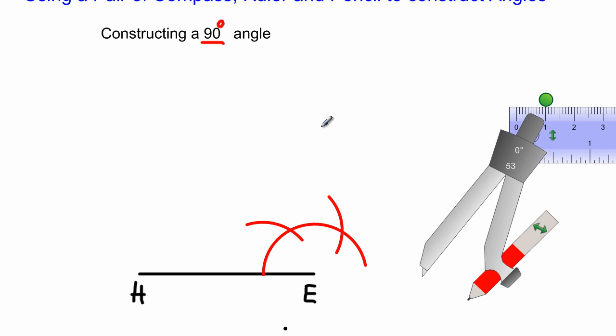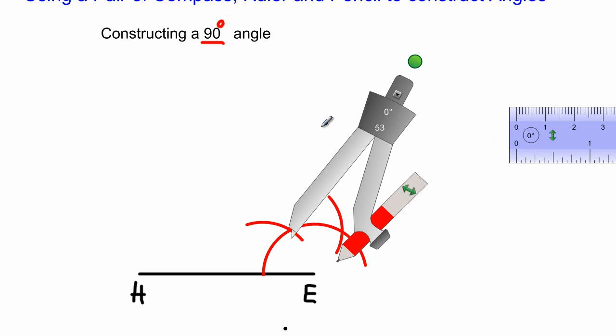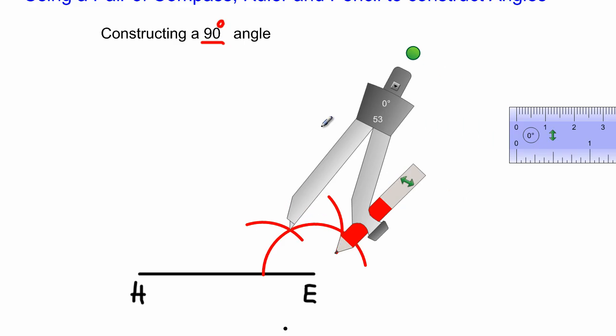What I'm going to do, I'm going to take my compass now, same radius. Just ensure that your compass hasn't slipped, and I'm going to place it right there at that intersection. Now I'm going to pull it up here.